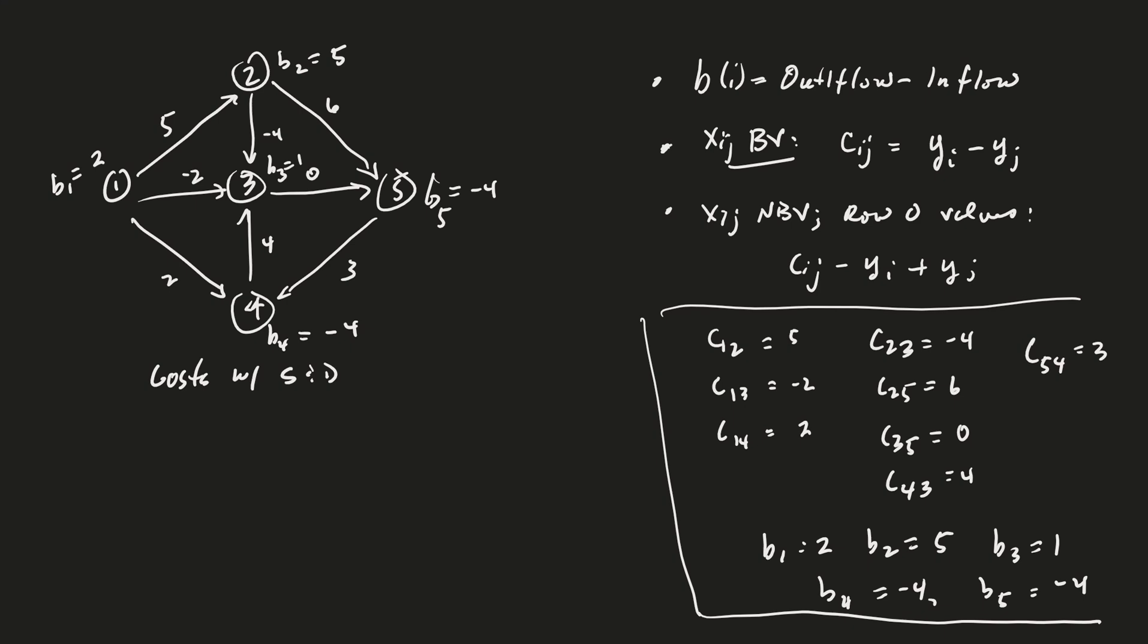Okay, so we're continuing section 8.7. I want to do a more substantial example than the one we did last time. And so here's a network with some costs and supplies and demands. So we have nodes 1, 2, 3, 4, and 5.